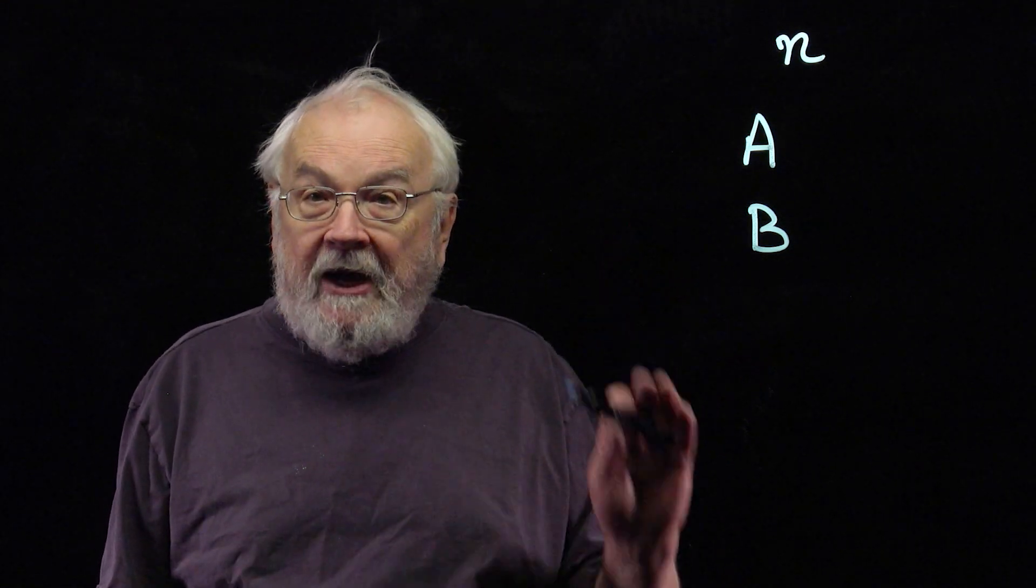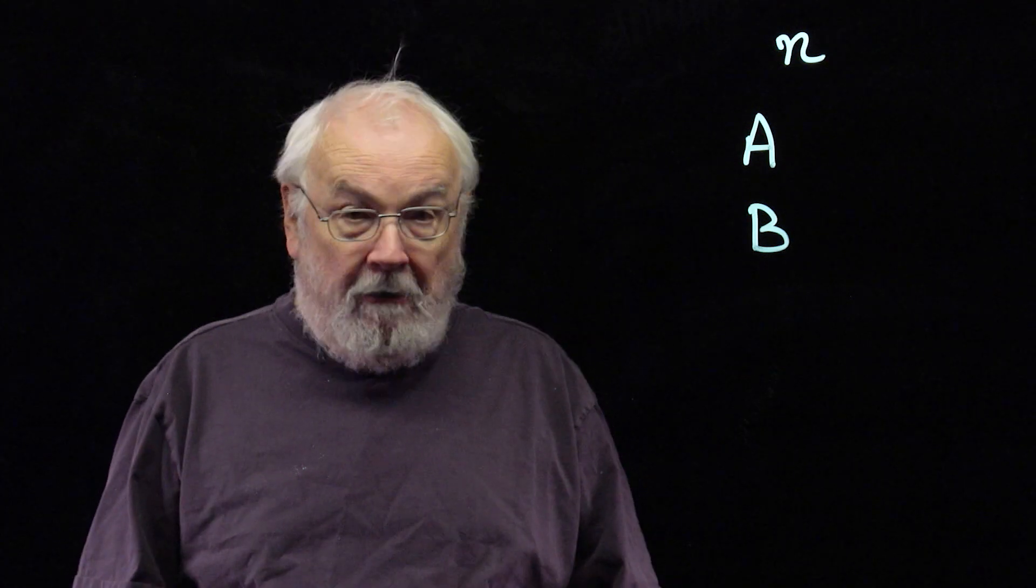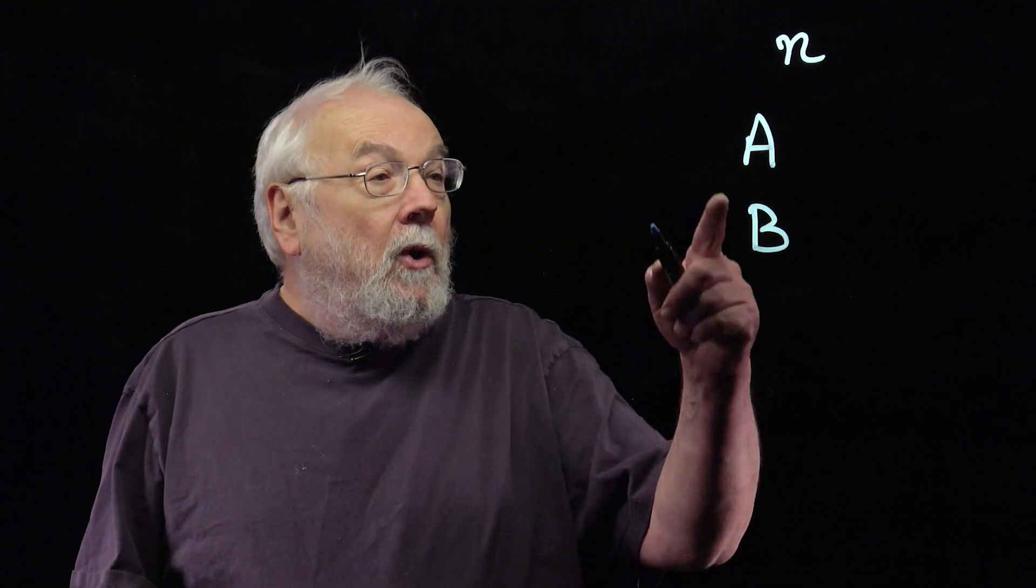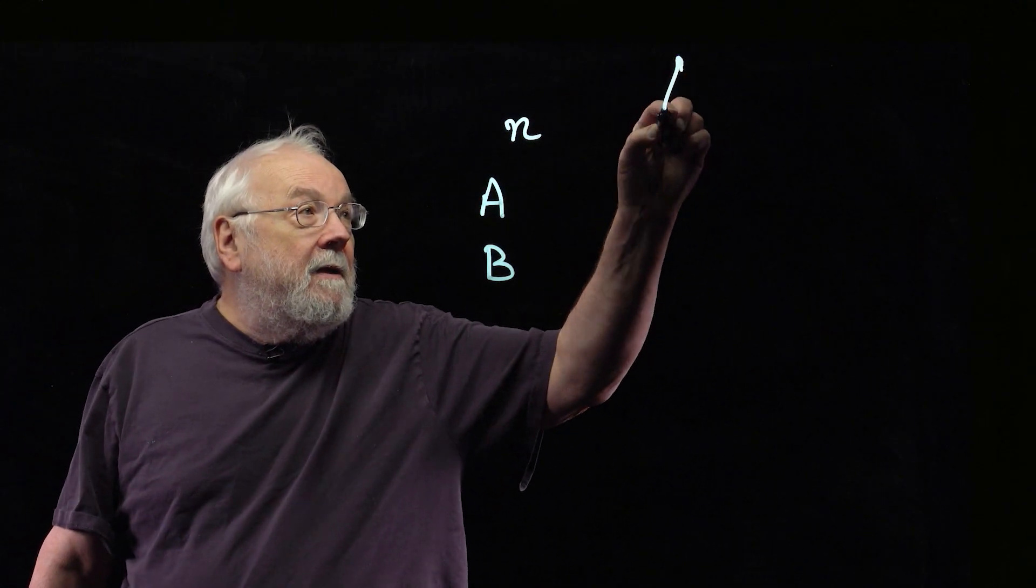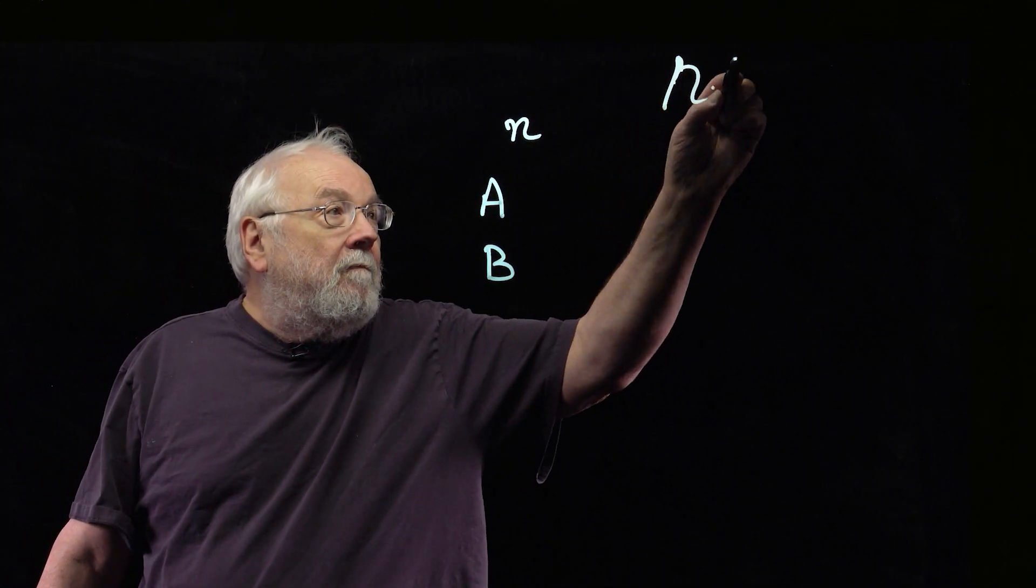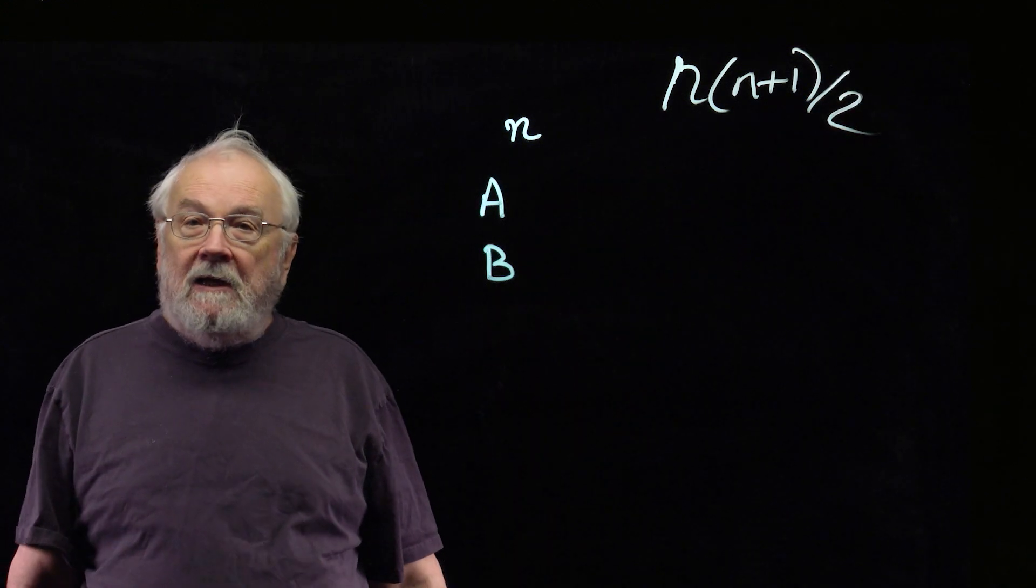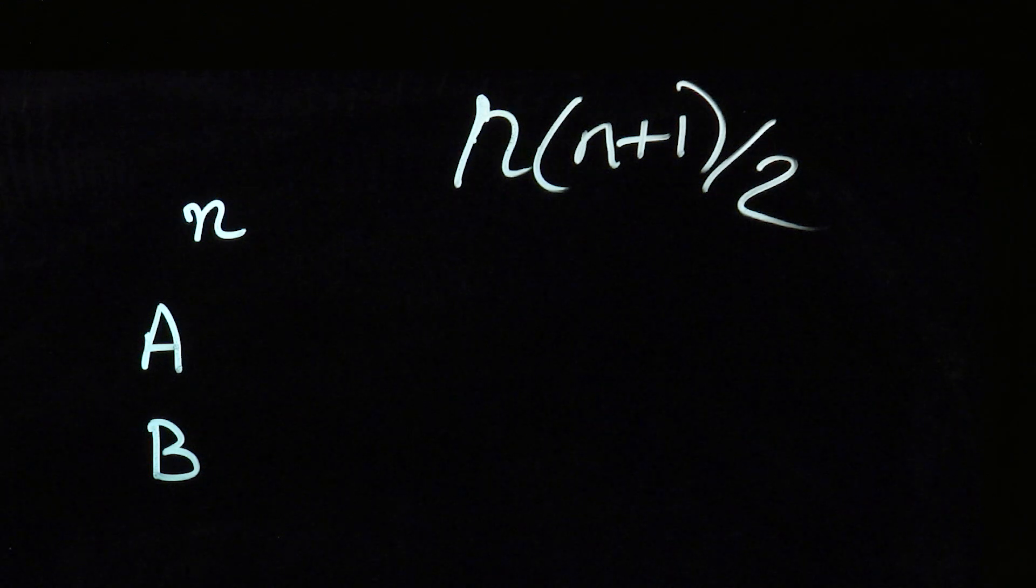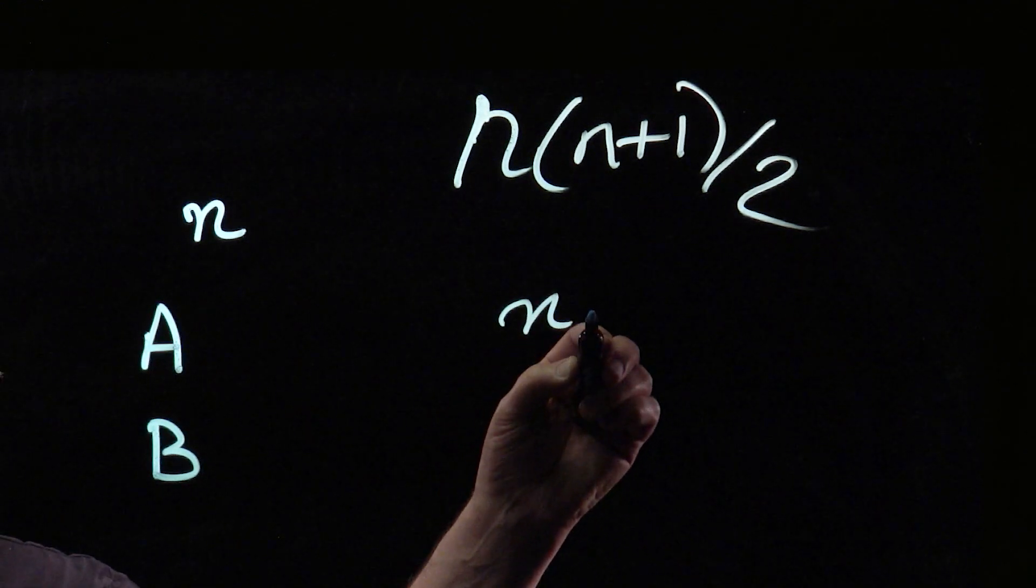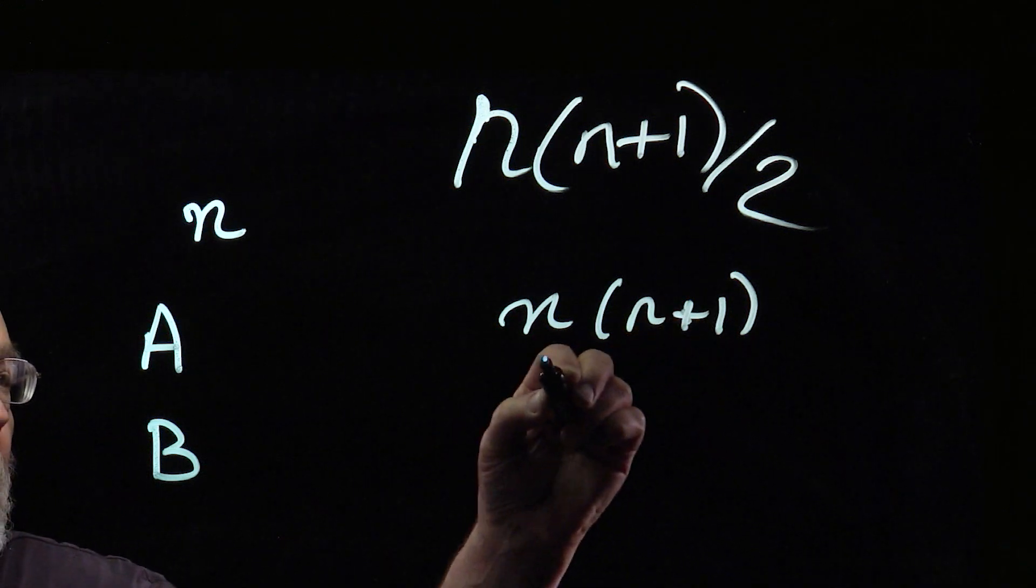And they're going to have the same sum, so that when you put in the minus signs, you get 0. So the sum of the numbers from 1 to n is famously n(n+1)/2. Each of these sets is going to have half of that, so they're each going to have n(n+1)/4.